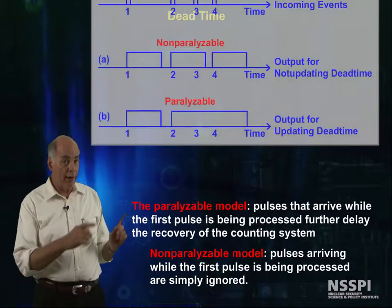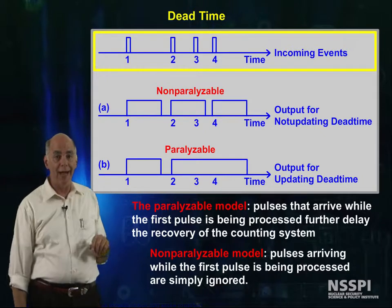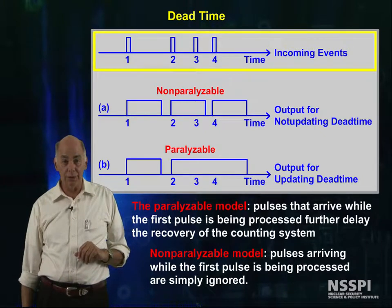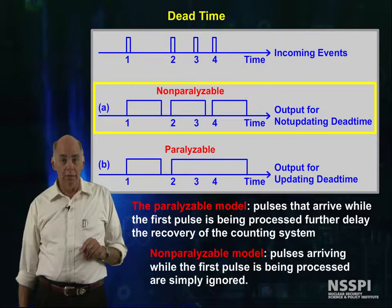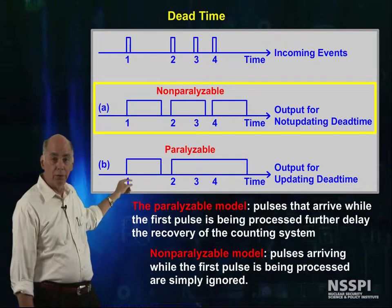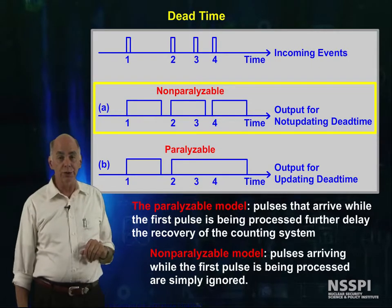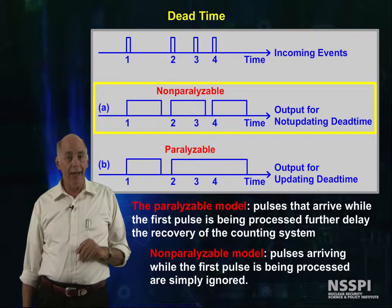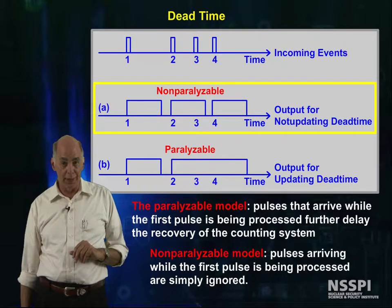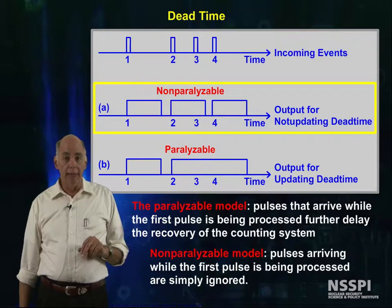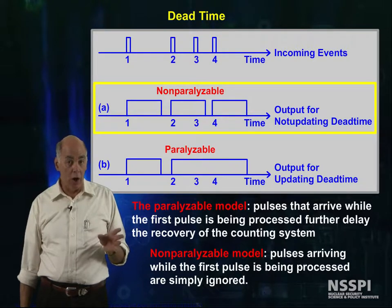Let's look at this graph together. The top curve represents the timing of the pulses arriving at the detector electronics. Curve A is the non-paralyzable model, with the processing time shown by the length of the pulse on this curve. Event 1 is sensed and accurately counted because pulse 2 arrives after pulse 1 is completely processed. Pulse 2 arrives and processing starts. Pulse 3 arrives, is ignored, and is lost. Pulse 4 arrives and is counted.